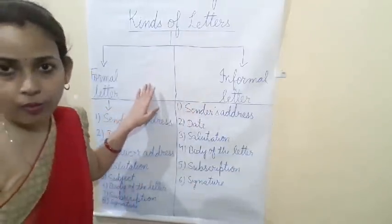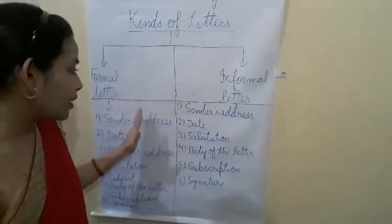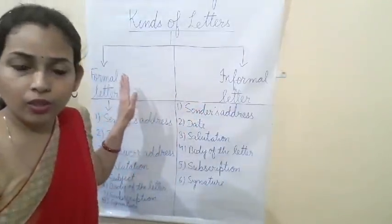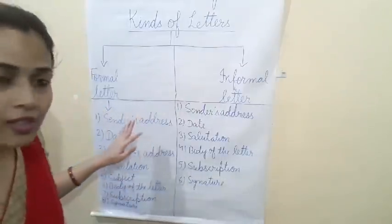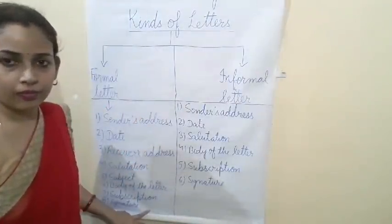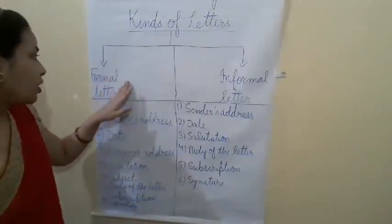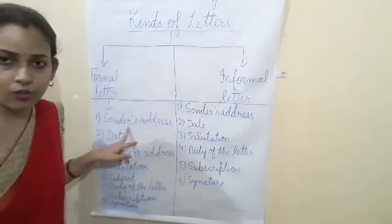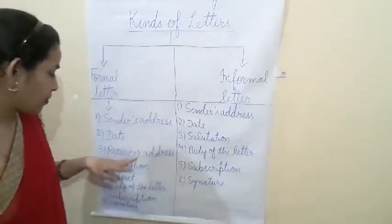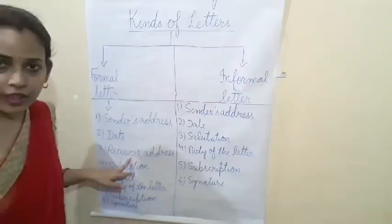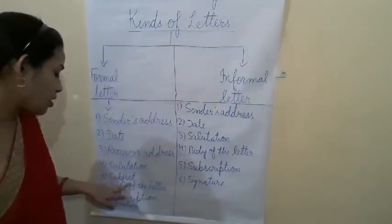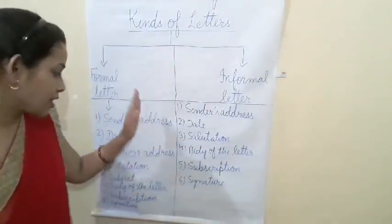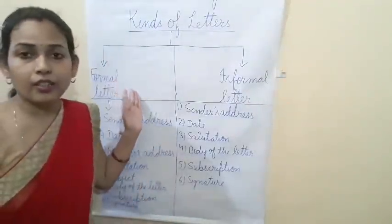Formal letter is different from informal letter — that we are going to study. In formal letters there are eight points we follow: sender's address, date, receiver's address, salutation, subject, body of the letter, subscription, and signature.